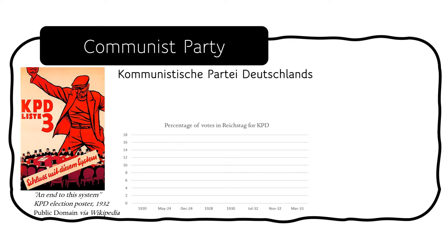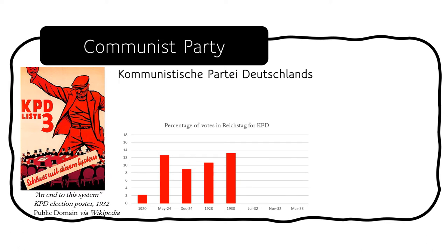The Communist Party continued to poll well throughout the various Reichstag elections during the Weimar period. From just 2% of the vote in 1920, they quickly became one of the major parties in the Reichstag. The May 1924 elections resulted in 13% of seats going to the KPD, followed by a slight decline to 9% in December the same year, before a steady climb — 11% in 1928, 13% in 1929, slightly over 14% in July 1932, and reaching a height of around 17% in November 1932.